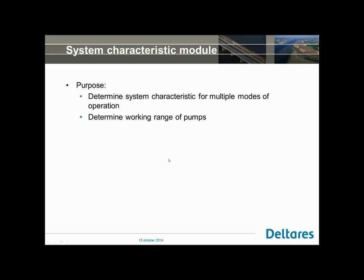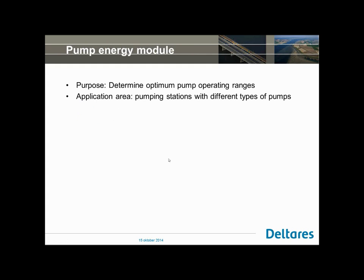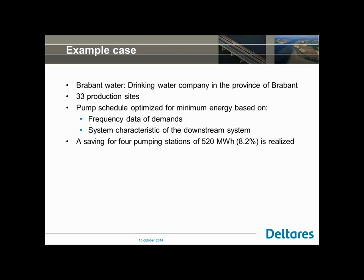That was the system characteristic module. Let's now go to the pump energy module. The purpose of this module is to determine the optimum pump operating range. You can use it for pumping stations where you have different types of pumps. For sewage systems you typically have the same pumps, but for drinking water systems you sometimes have small pumps, bigger pumps, and really big pumps. In those cases you can use this module to optimize and minimize your energy usage by looking at the operating range of your pumps.